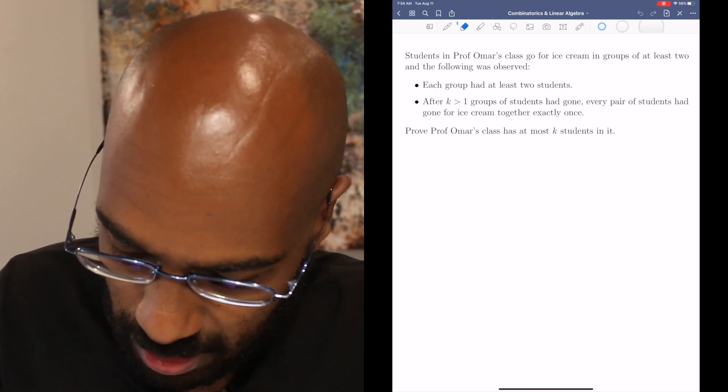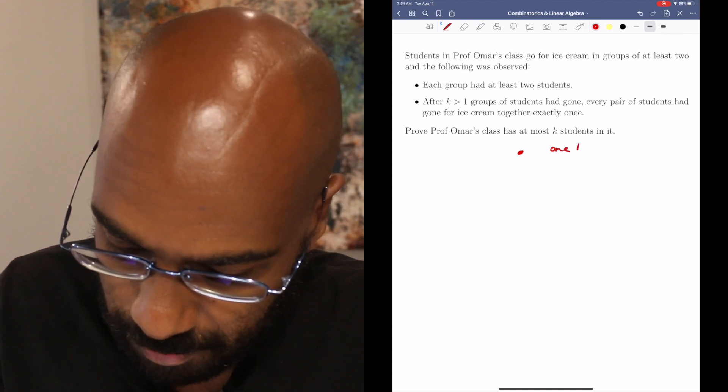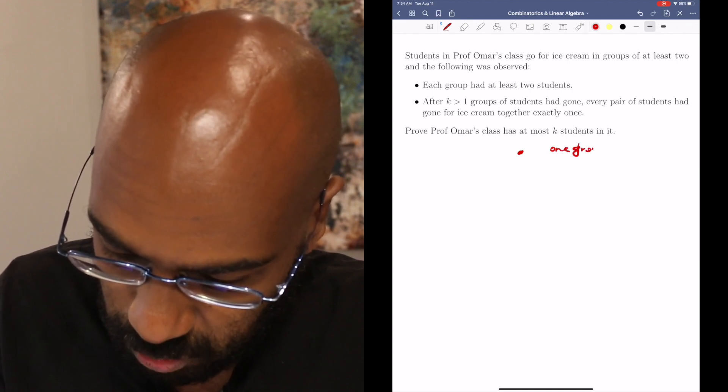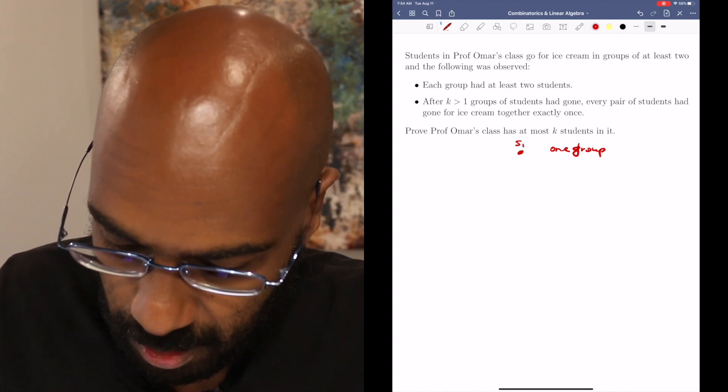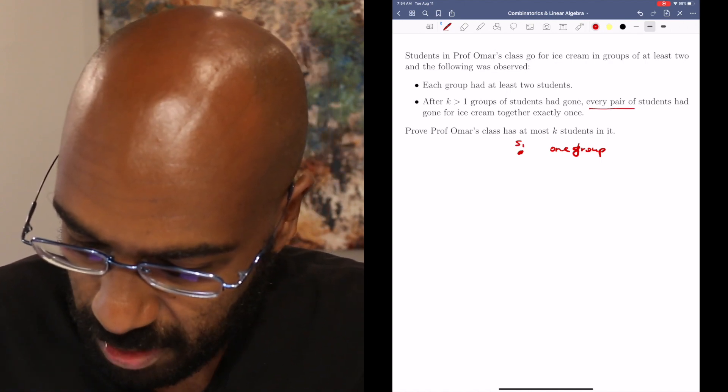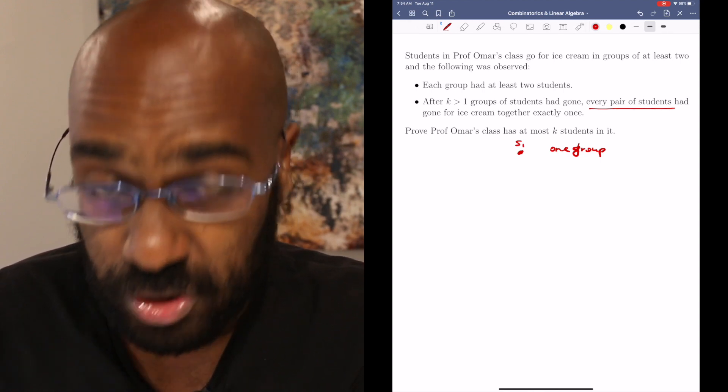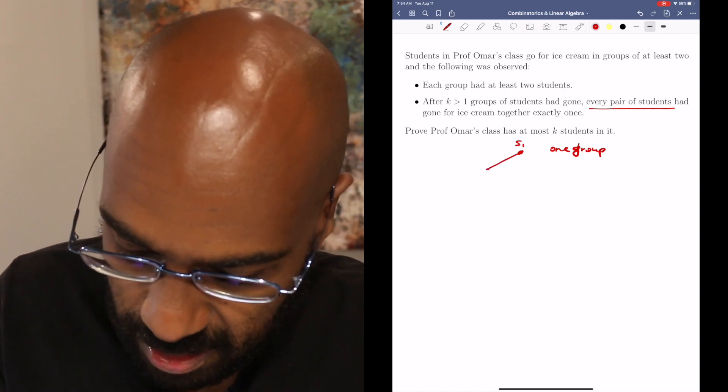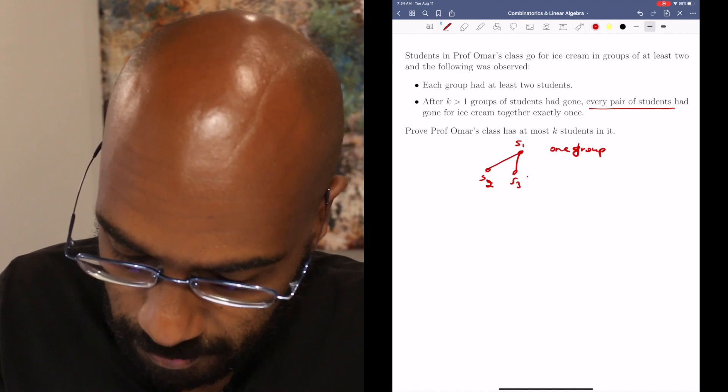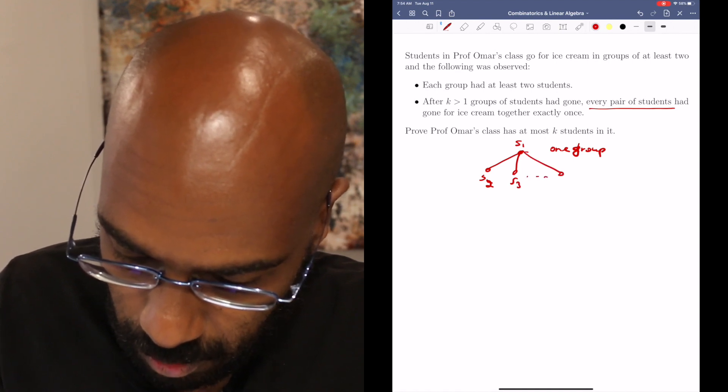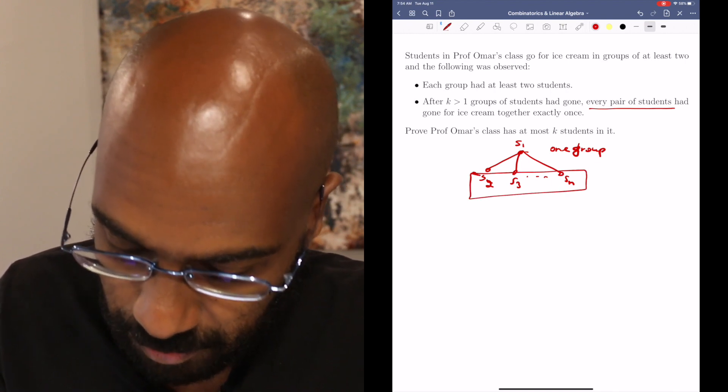So imagine you had a student who only went on one trip, right, or was part of only one group. Okay, let's call that student S1 or something. Okay, well, since every pair of students have gone for ice cream together exactly once, then if there's n students, this person went in a group with all the remaining students, because they only went in one group.